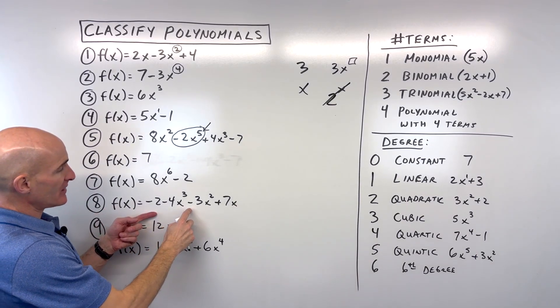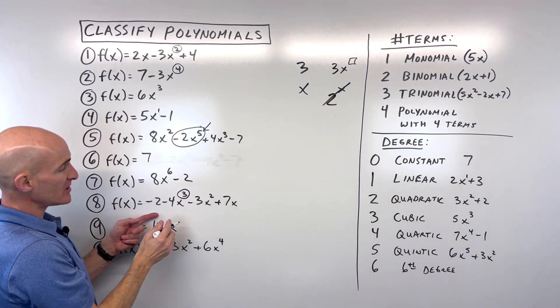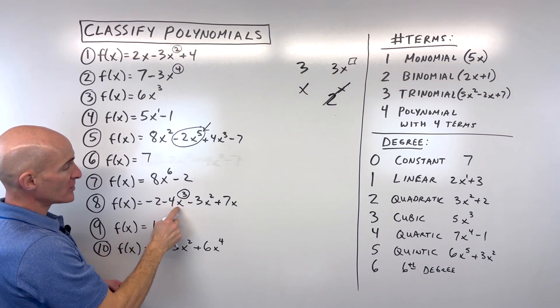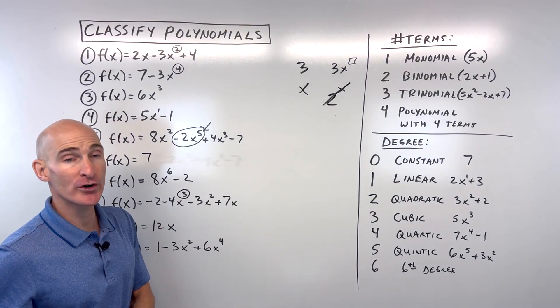For number eight, what do you think here? Highest power looks like it's 3, so we're looking at a cubic. 1, 2, 3, 4. So a cubic polynomial with four terms.